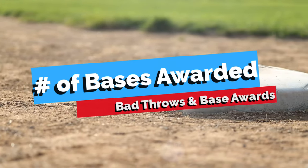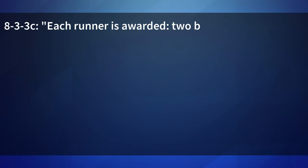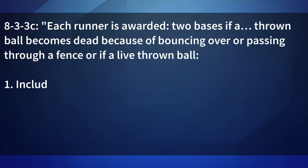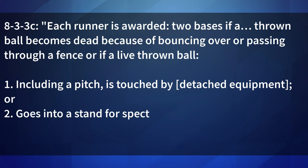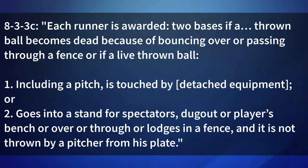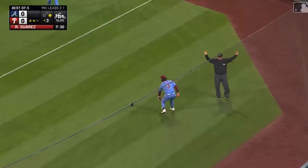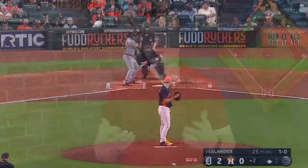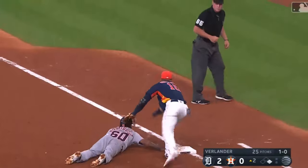Let's cover the number of bases awarded. Rule 8-3-3c: each runner is awarded two bases if a thrown ball becomes dead because of bouncing over or passing through a fence, or if a live-thrown ball, including a pitch, is touched by detached equipment or goes into a stand for spectators, dugout, or player's bench, or overthrows or lodges at a fence, and it is not thrown by a pitcher from his plate. This tells us that pretty much any thrown ball out of play will have a two-base award. The only exception is a pitched ball or a ball thrown out of play by a pitcher who is engaged to the rubber.